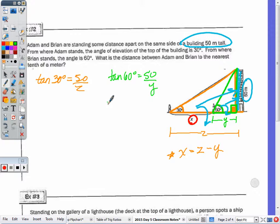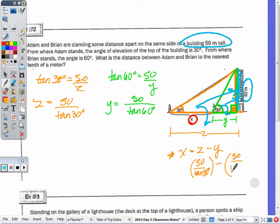As we said in the warm-up and earlier in the notes, Y is equal to 50 divided by the tangent of 30 degrees. So if you're going to type it in the calculator, you could type in the exact, which would be 50 over the tangent of 30 degrees minus 50 over the tangent of 60 degrees. And what do we get? So the distance is going to be approximately 57.7 meters. So that's how far Brian and Adam are apart standing.